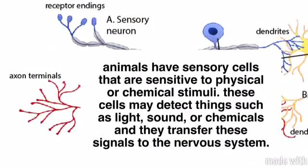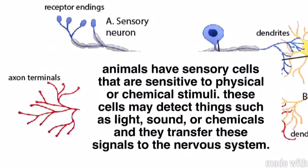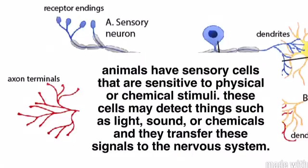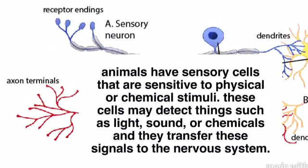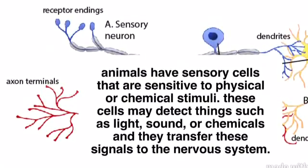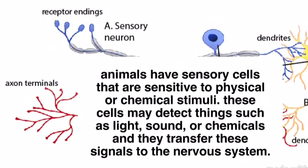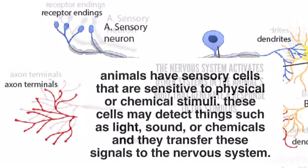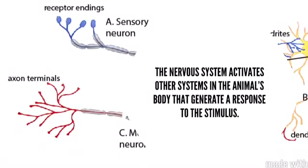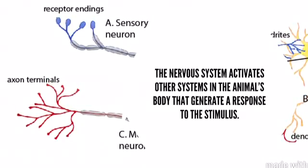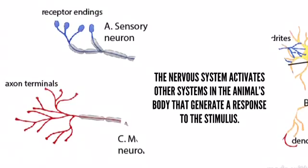Animals have sensory cells that are sensitive to physical or chemical stimuli. These cells may detect things such as light, sound, or chemicals, and they transfer these signals to the nervous system. The nervous system then activates other systems in the animal's body that generate a response to the stimulus.